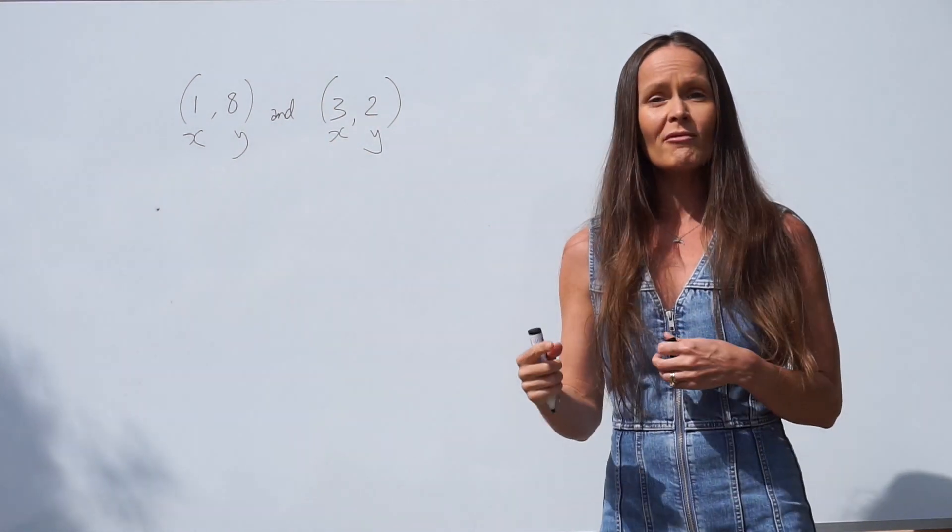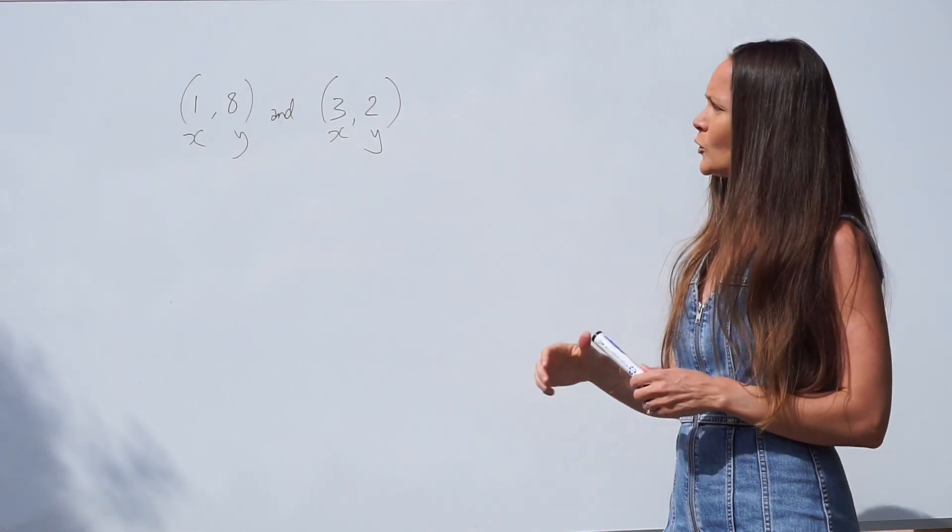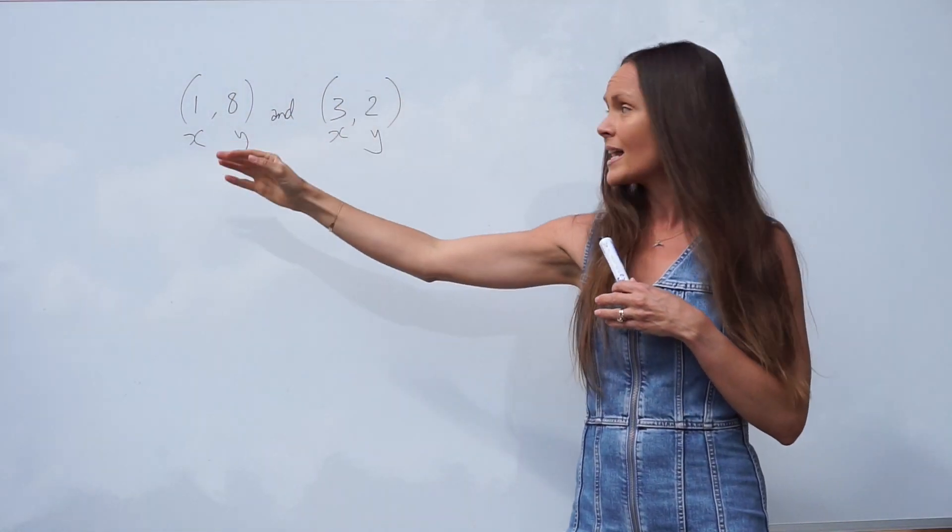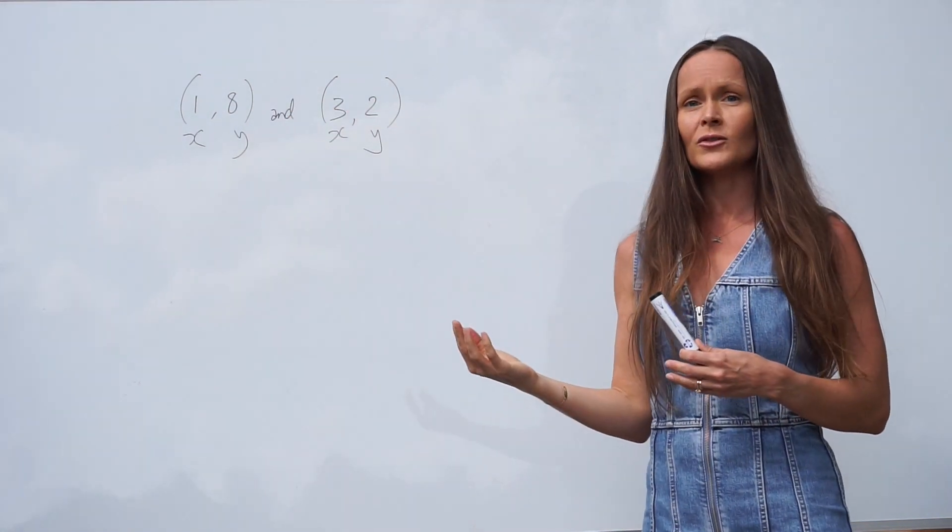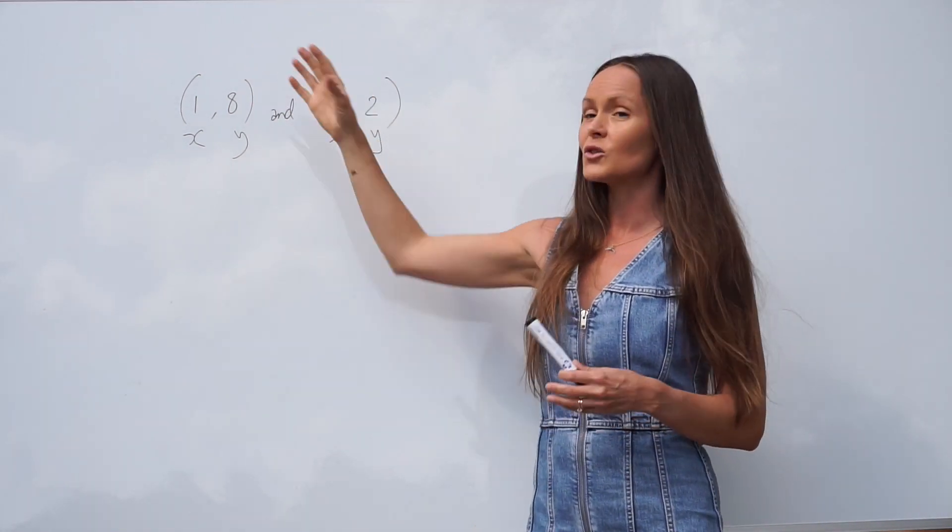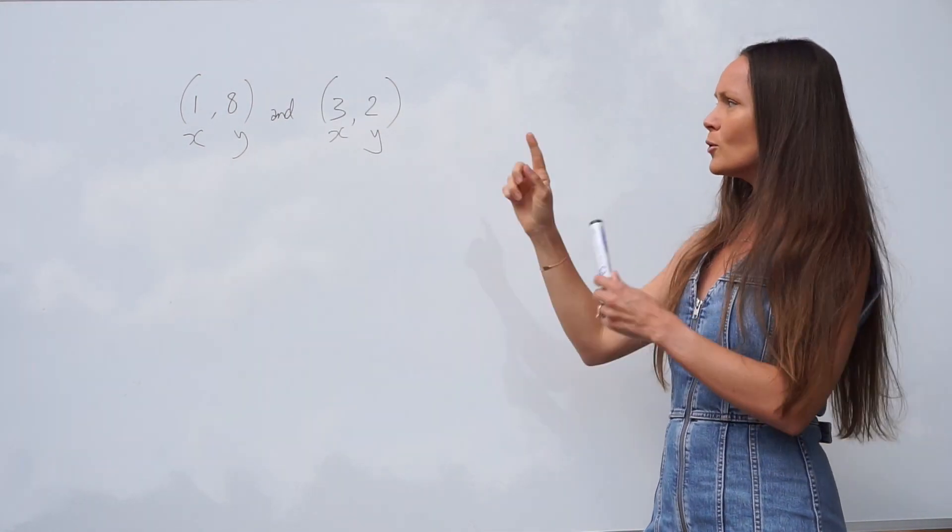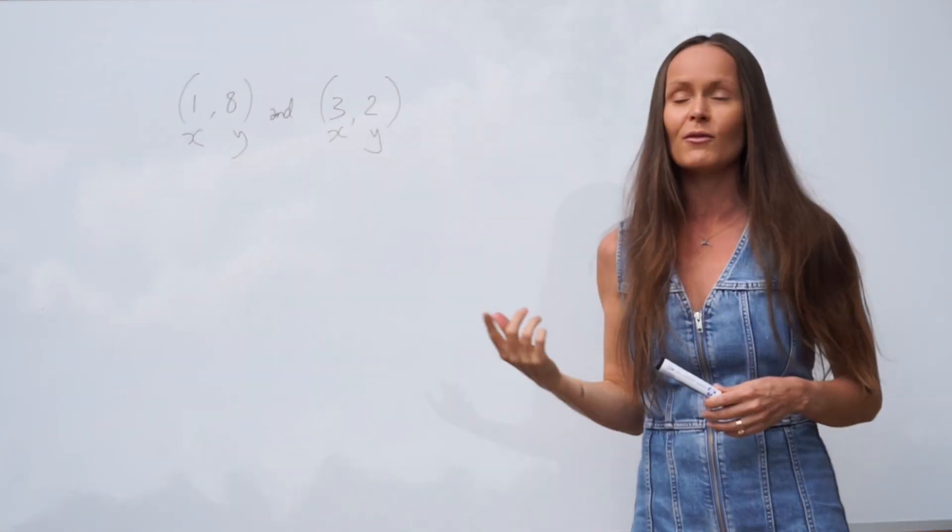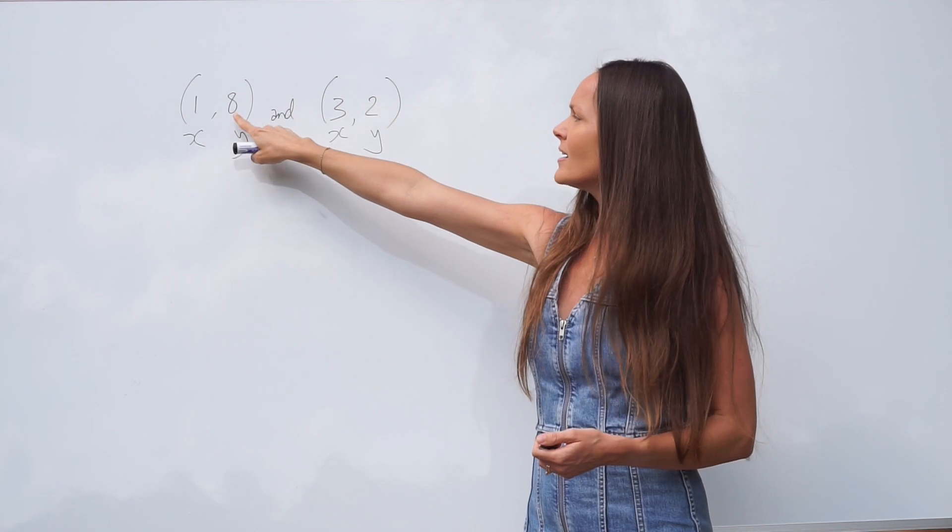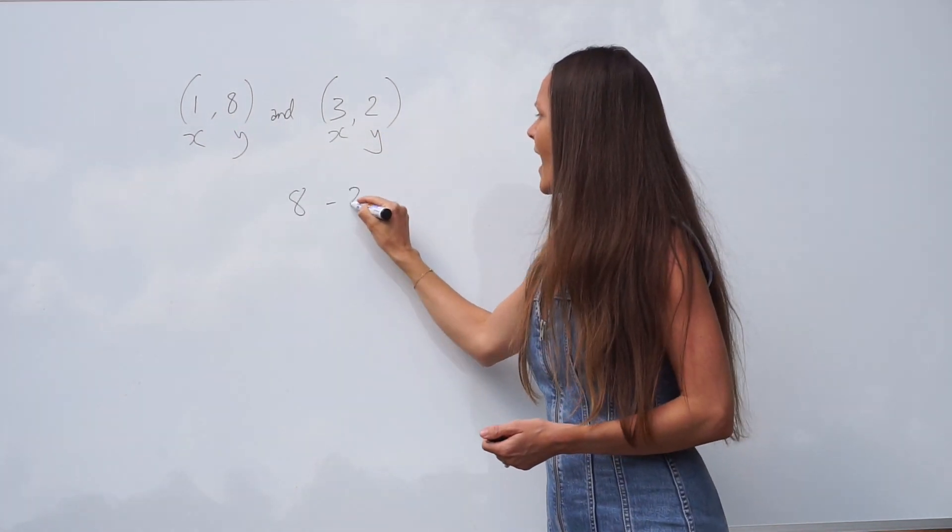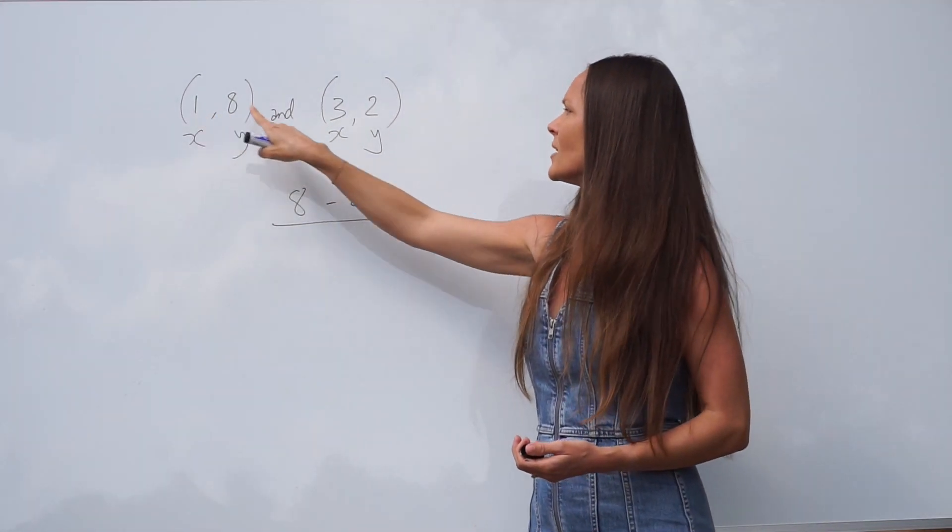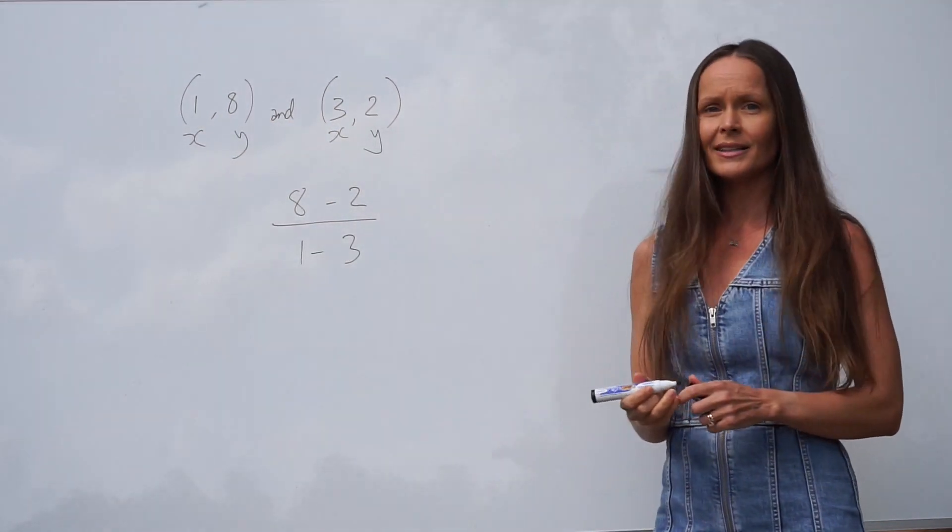It doesn't matter which way round you subtract them, but if you decide to do this one minus this one, you have to do the same order for the x values. If you decided to do 2 minus 8, you would have to do 3 minus 1 for the x values. So it's important that when you choose your order, you do the same for both. If we subtract the y values here, 8 take away 2, and subtract the x values in that same way, 1 minus 3, you need to divide them.